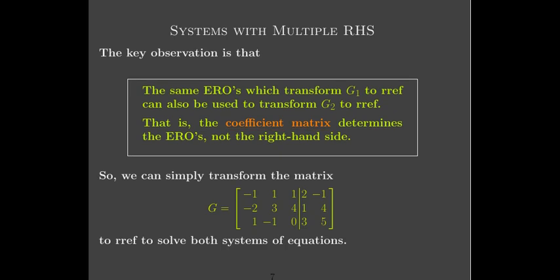So the idea is to put both right-hand sides in your augmented matrix and perform the elementary row operations on this extra-large augmented matrix with two columns — two right-hand sides, two extra columns. I'll be able to read the solution after I have transformed this matrix to reduced row echelon form.